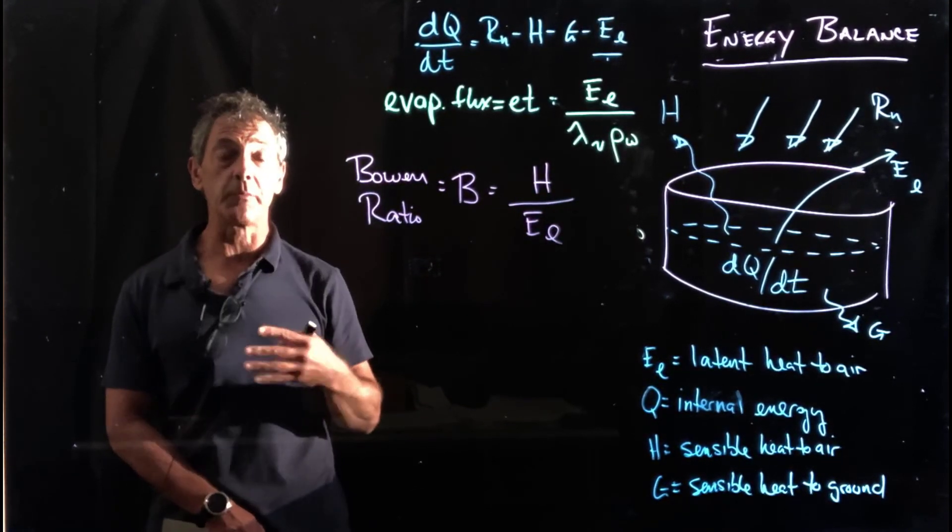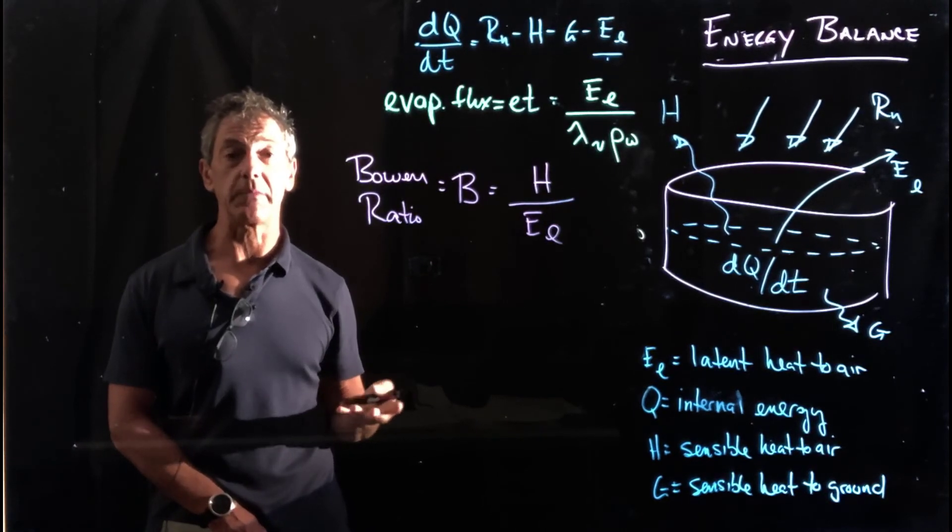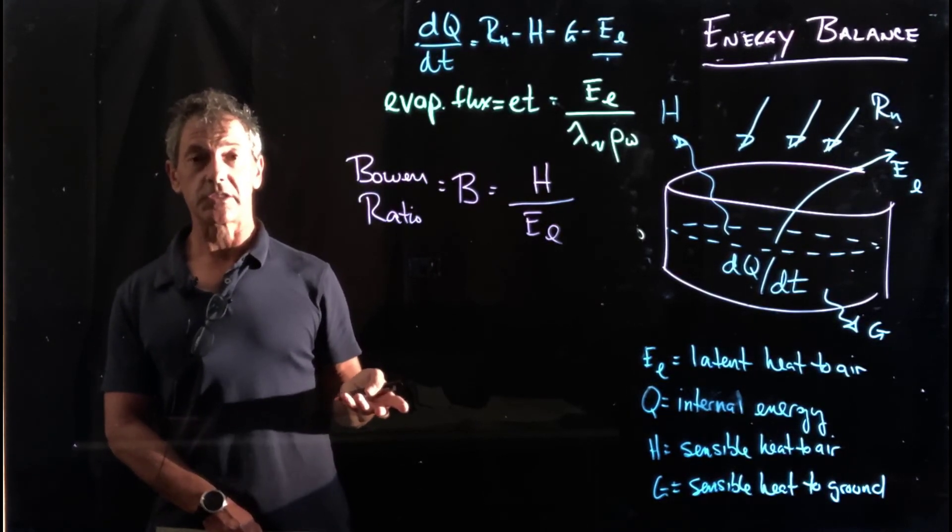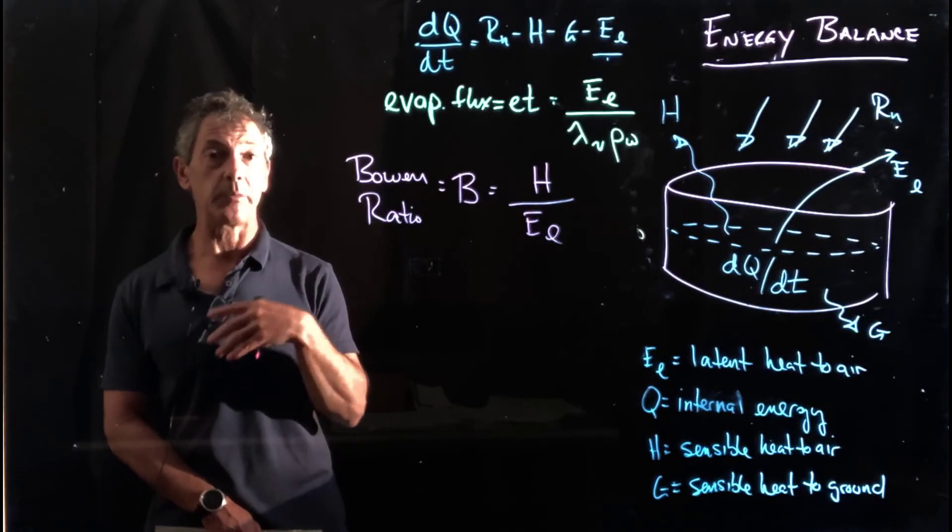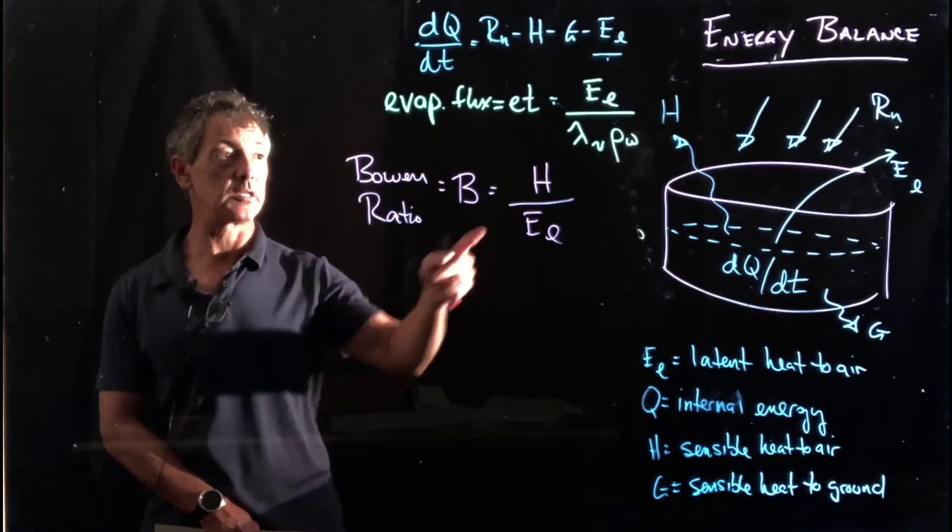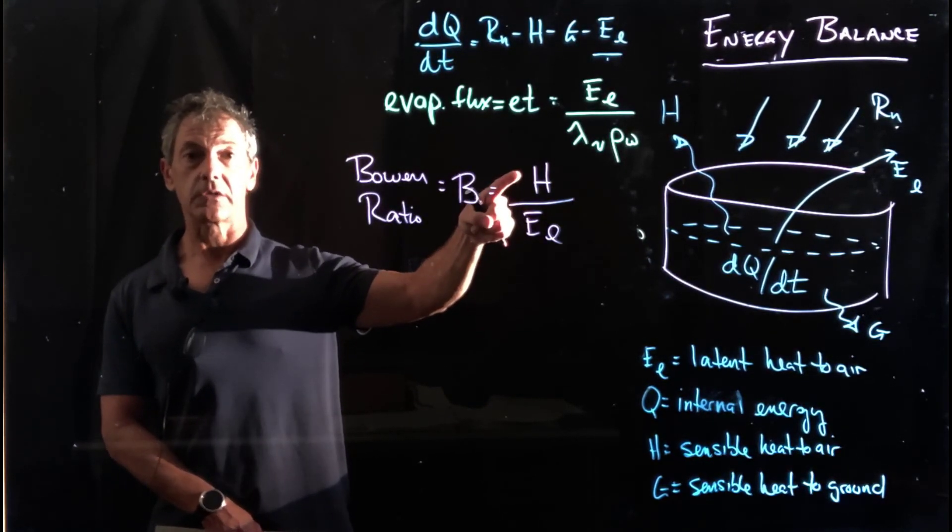In the case where most of the energy transfer is happening because you've got sensible heat transfer to the atmosphere, so maybe there's not a lot of evaporation, then Bowen Ratio is going to be large.